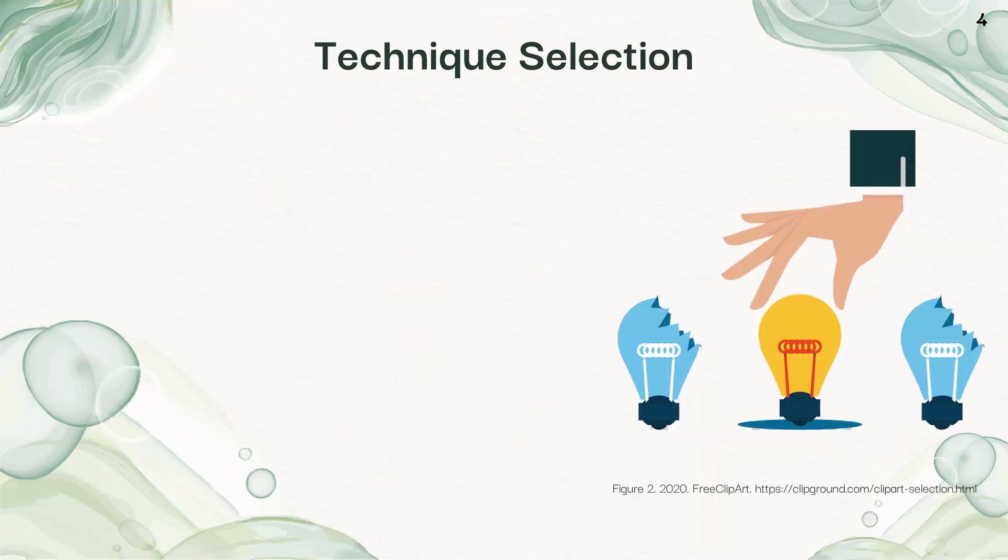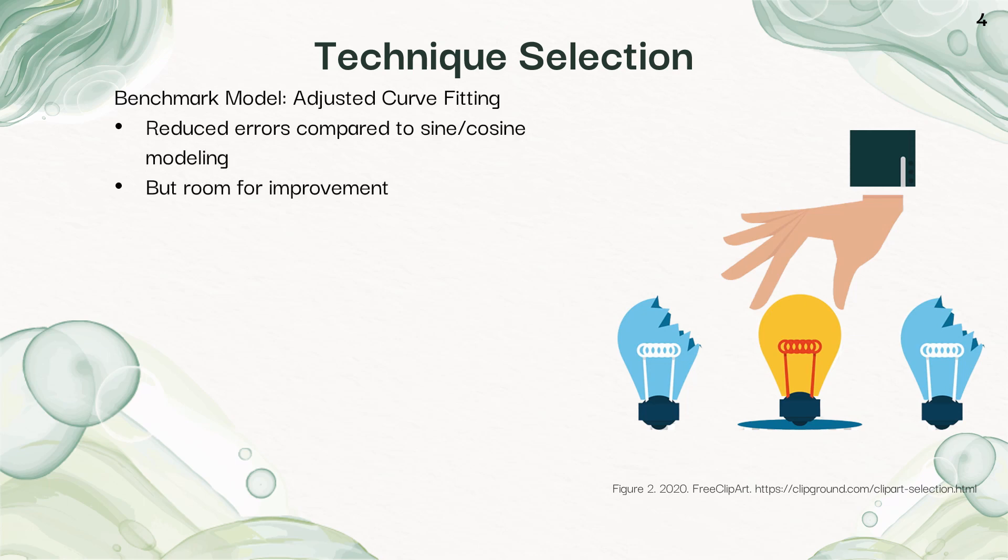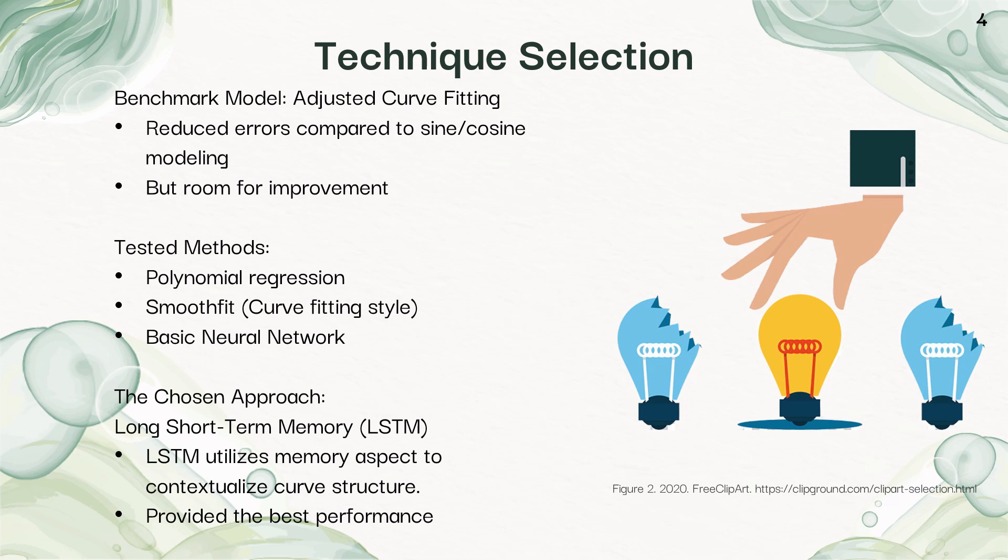The first person to try to improve on the traditional disaggregation model is this adjusted curve fitting model. It was made by a PhD student in the lab, Supria, and it reduced errors compared to that traditional model, but there was room for improvement. I tested a couple other methods, but I ultimately decided on long-short-term memory, which is the deep learning technique that performed the best.